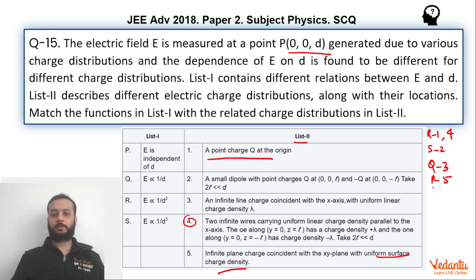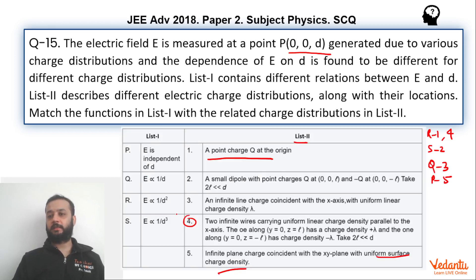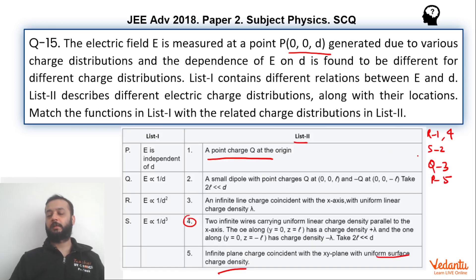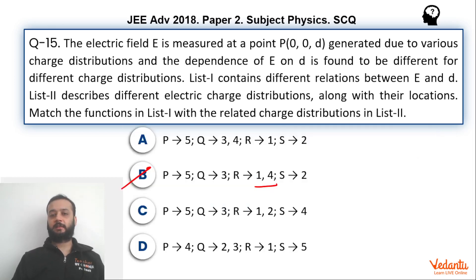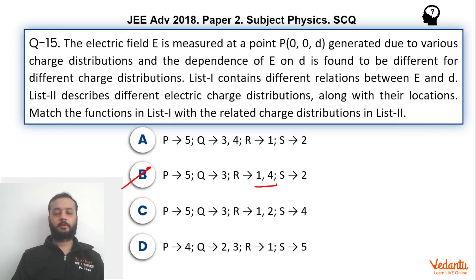If you go back to option, you can see that only this option matches. P is going with 5, Q is going with 3, which is what we found, R is going with 1, 4 and S is going with 2. Now if you realize one thing that 4 is like in the option B, 4 is going with R. In none of the other options 4 is going with R. So in the exam you could have just solved option number 4 and you would have found the correct answer. You were not required to solve 1, 2, 3 and 5. I hope you would have understood and appreciated the solution. That's it, thank you.